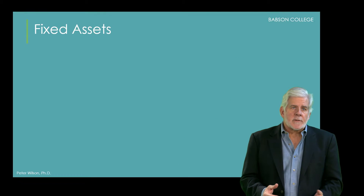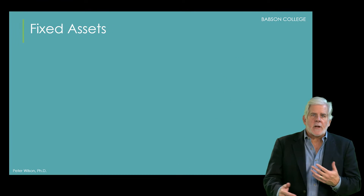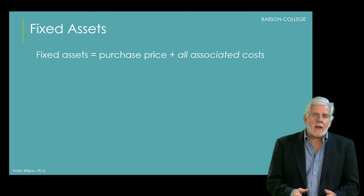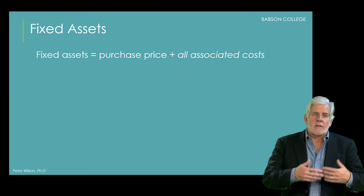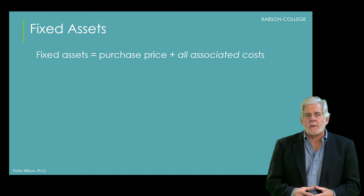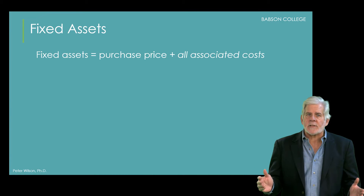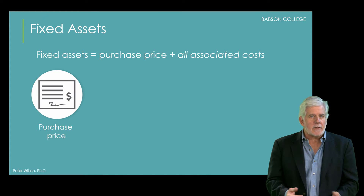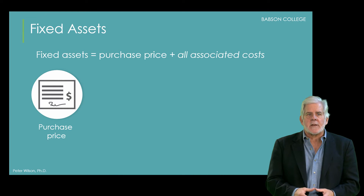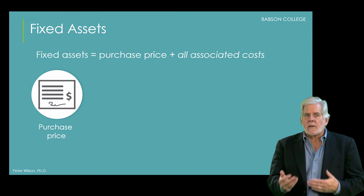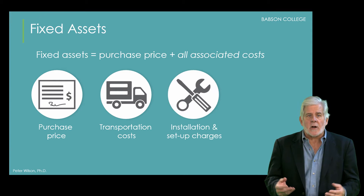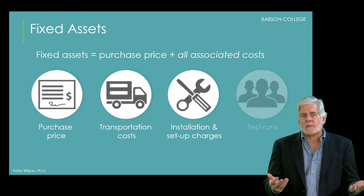When fixed assets are purchased, there are often material associated costs in addition to the purchase price that must be paid in order to get the assets delivered, installed, and ready for use in the business. Accounting rules require that all costs necessary to purchase and get the asset ready for use be capitalized as part of the cost of the asset. The associated costs can include things like freight or transportation costs, installation costs, and the cost of test runs if necessary.